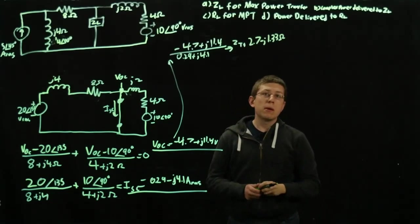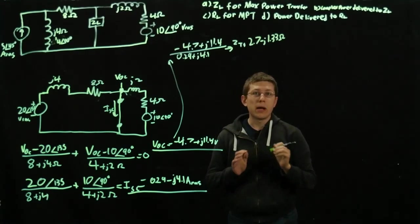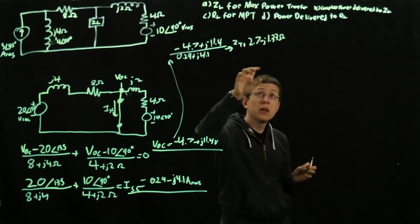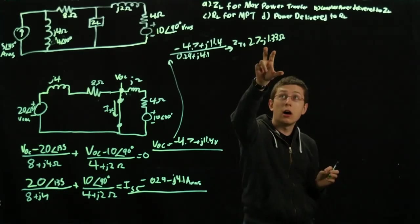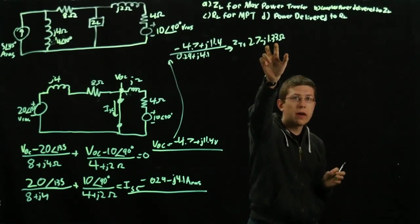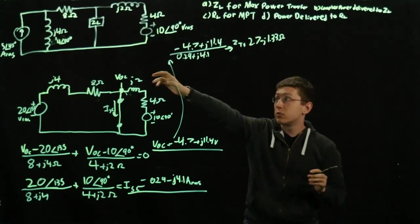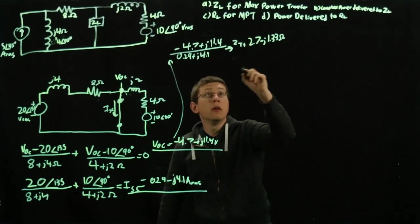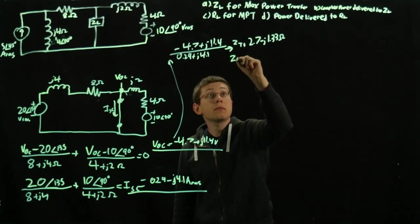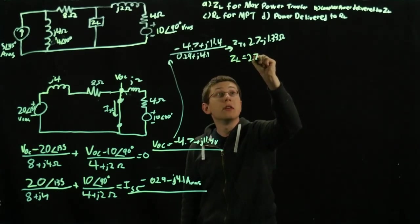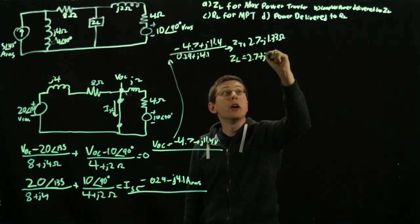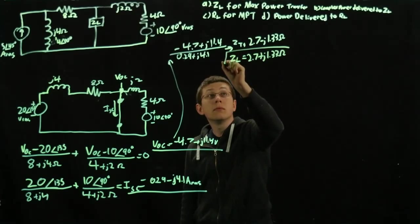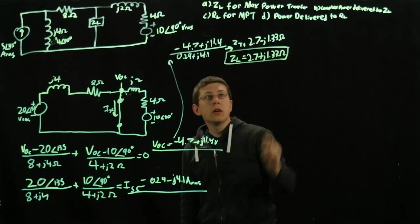Now what we have to remember is that our ZL for maximum power transfer is going to be the complex conjugate of that. The reason is because we want to cancel out the effects of J so that we'll get maximum real power transfer through this circuit. So our ZL is going to be 2.7 plus J1.33 ohms. That's part A done.